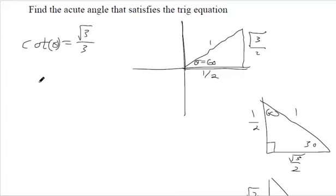Now, to see if my guess is right, I'll do the cotangent ratio. Remember, cotangent is the reciprocal of tangent, so adjacent divided by opposite. The adjacent side is 1 half, and I divide that by the opposite side, square root of 3 over 2.